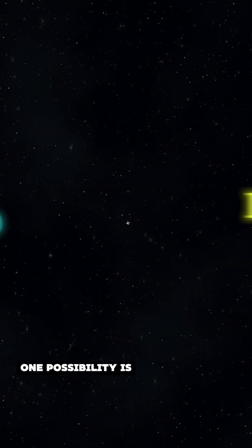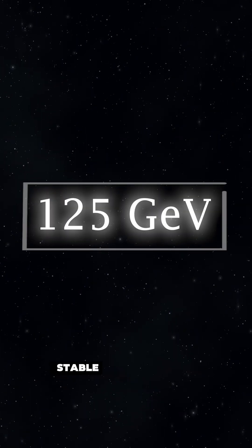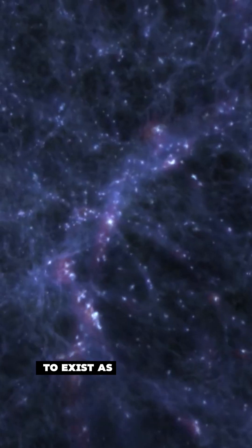One possibility is that something, perhaps purely mathematical cancellations, kept the Higgs boson's mass stable, allowing the universe to exist as we see it today.